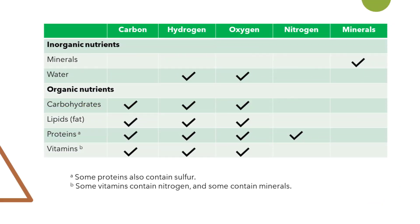As we go through the term, we will have specific sections associated with each of these six classes of nutrients, and as we study them in depth, we will look at the elements that make up each of these nutrients. Water is made up of hydrogen and oxygen, but the other nutrients are also made up of elements. Carbohydrates are made up of carbon, hydrogen, and oxygen; lipids are the same. Proteins have the extra element of nitrogen, and minerals are actually elements in and of themselves.